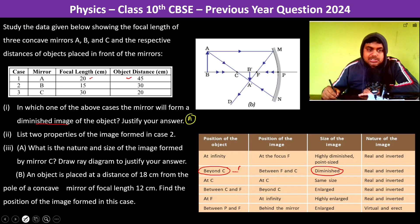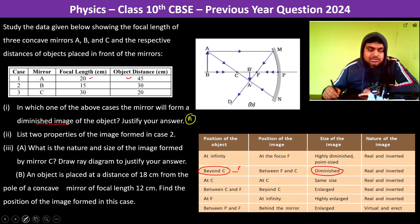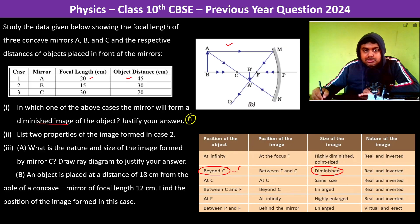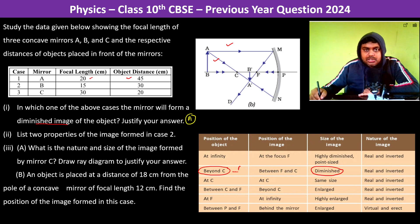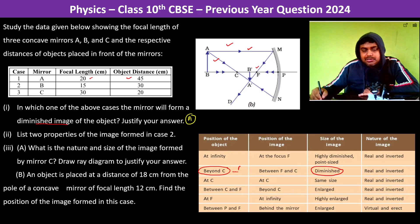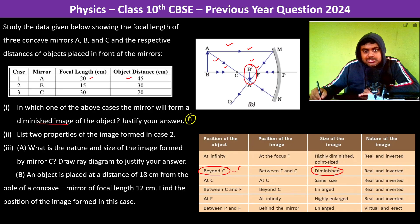We can justify our answer in two ways. First, by drawing the ray diagram as shown in the figure. The object is placed beyond 2f. We draw two rays: one ray parallel to the principal axis reflects and passes through the focus, and the other ray passes through the centre of curvature and returns back. The image is formed between the centre of curvature and the focus, and as we can see, the image is diminished.